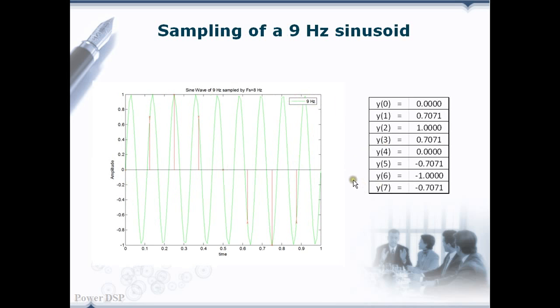Again, we are going to sample this 9 Hz signal with the sampling frequency of 8 Hz. That is, we are going to take 8 samples from these 9 cycles in 1 second. The adjacent table shows the samples.